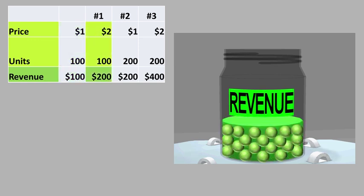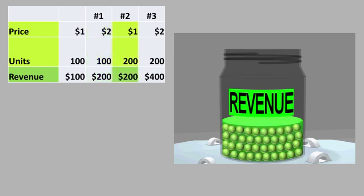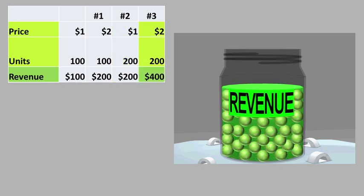In the first scenario, revenue increases when price increases and quantity remains the same. In the next scenario, the same amount of revenue is generated by increasing quantity while price remains the same. In the final scenario, revenue increases when price and quantity increase together.